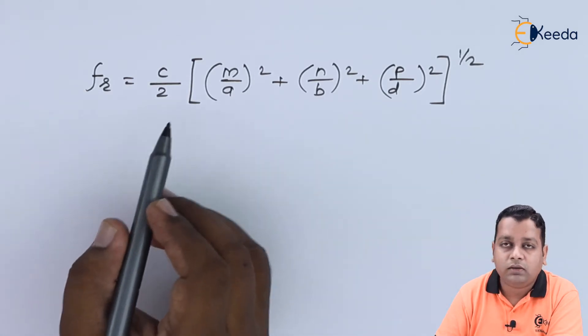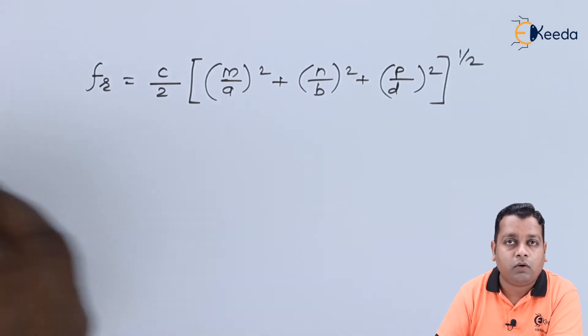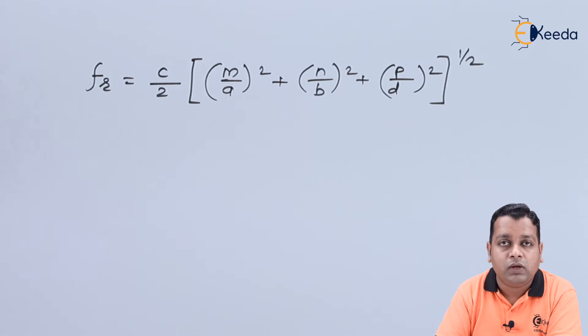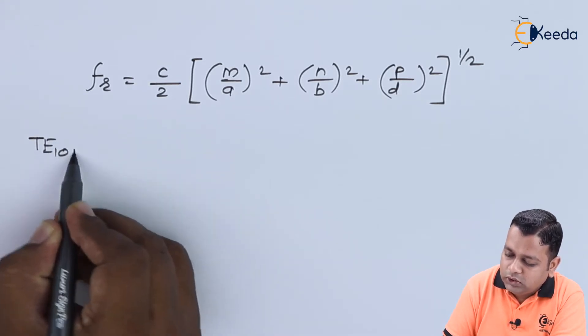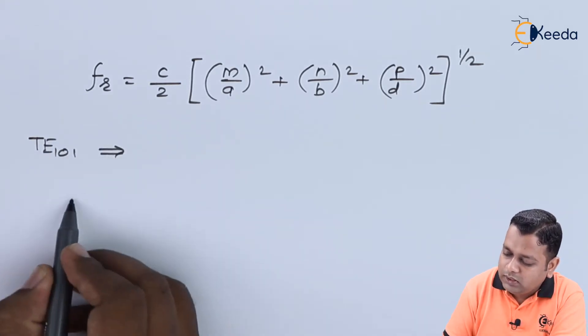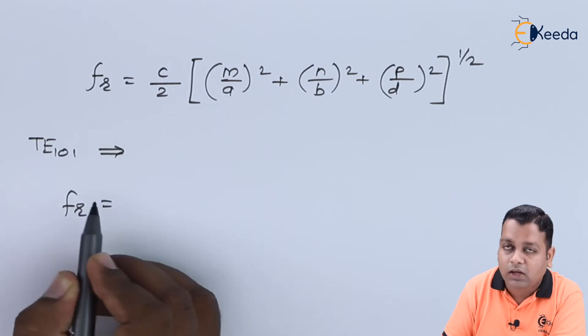For the dominant mode of operation, we obtain the wavelength to be of highest value whereas the frequency of least value. The frequency and wavelength have inverse relation. So for TE 101, the lowest frequency value of resonance is obtained.